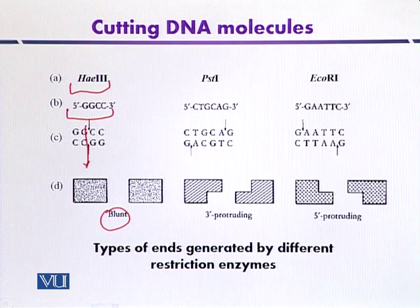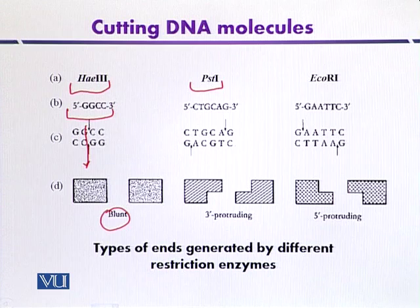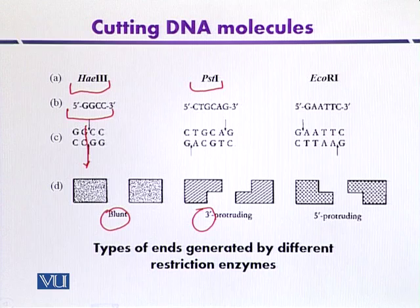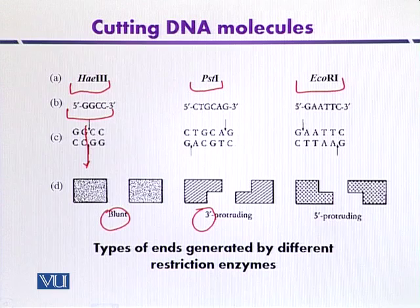In the case of PST1, this is another restriction enzyme that can recognize a 6-nucleotide sequence. When it cuts, it produces sticky ends with 3' protruding overhangs. EcoR1, as discussed, also produces sticky ends, but the termini produced have 5' overhangs.